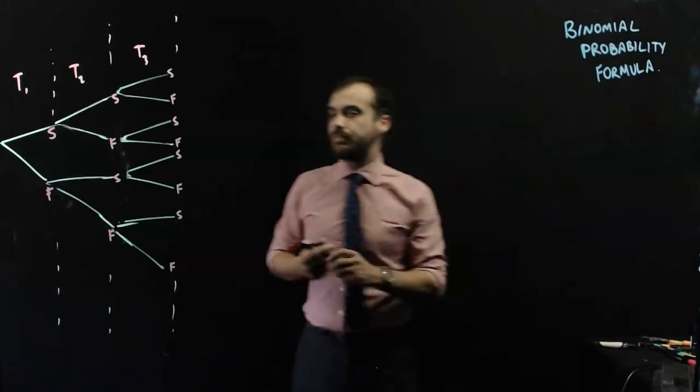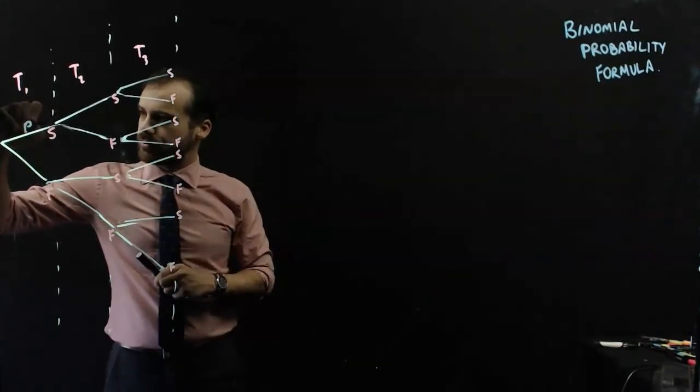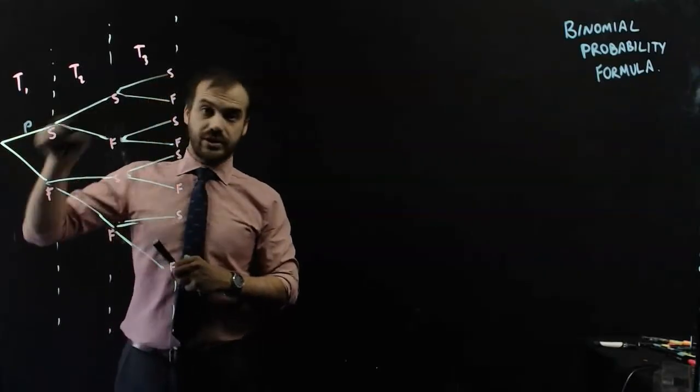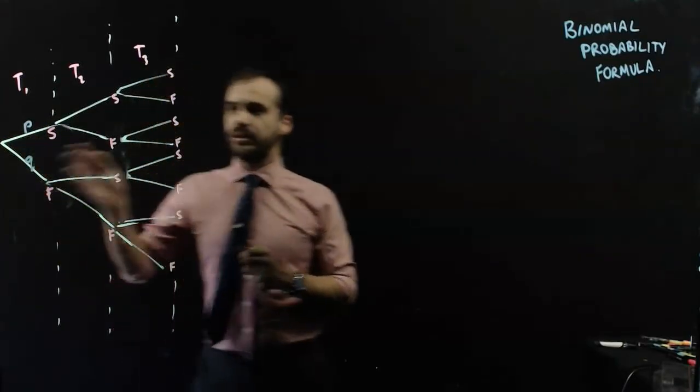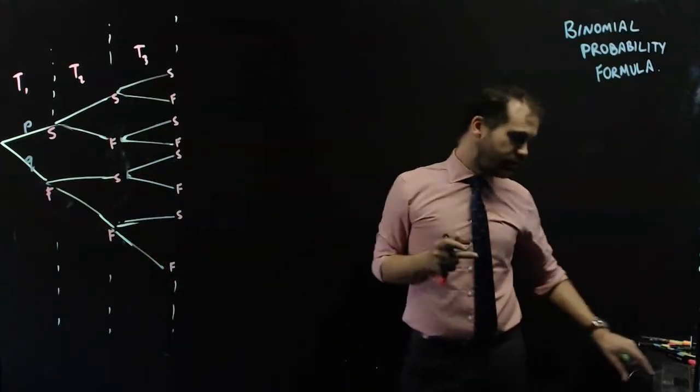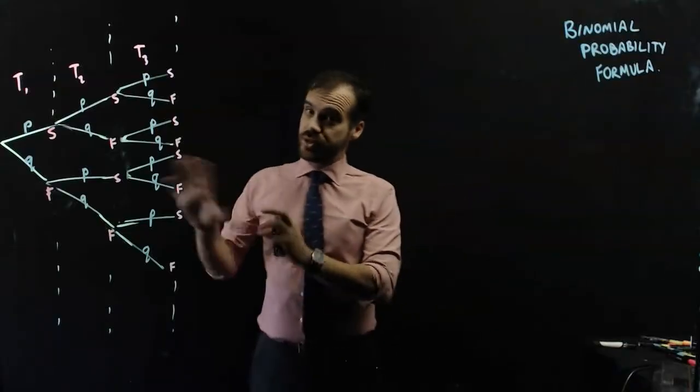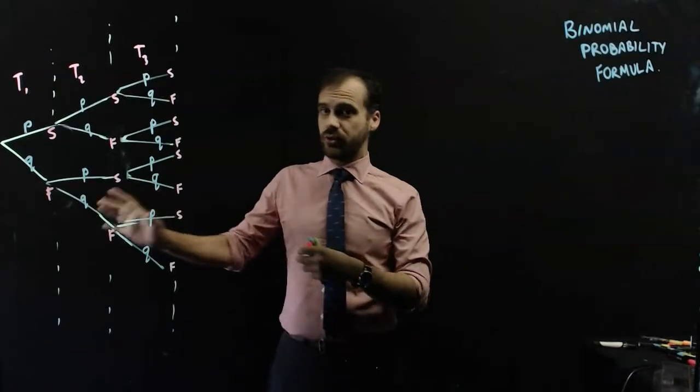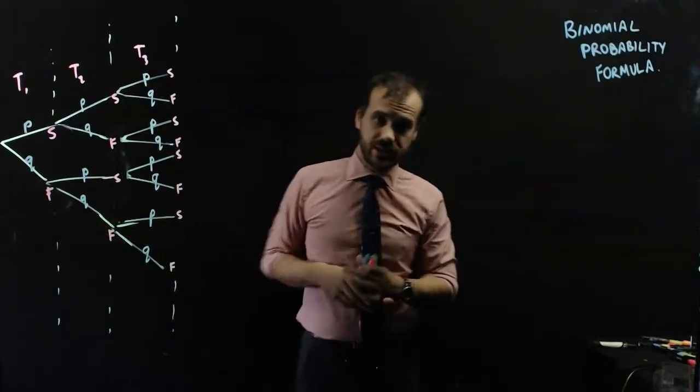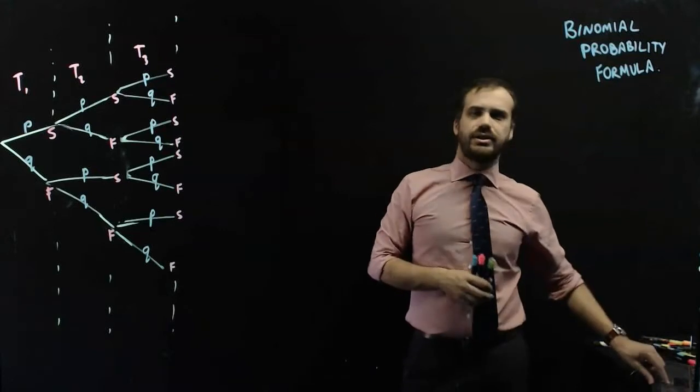Now the probability of each of those can be represented by the letter P. P for success, probability of success. And Q for the probability of failure. And of course that counts for everything. And we're going to use this tree diagram now. You can see there's no numbers here. That's on purpose because now we can develop a probability formula just using all of these letters. We're just going to focus on the P's and Q's. The S and F don't really count for much here.